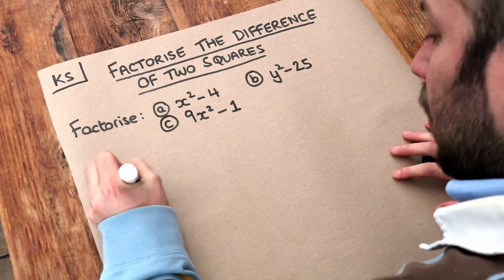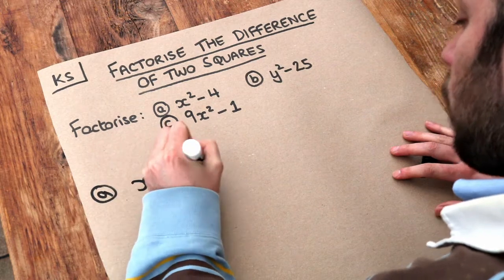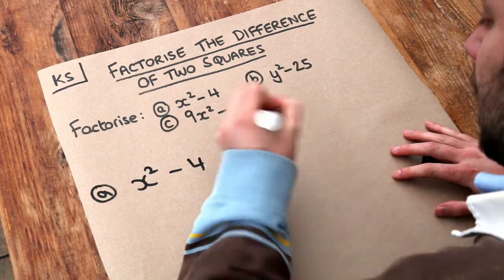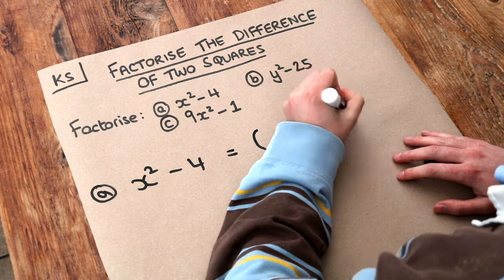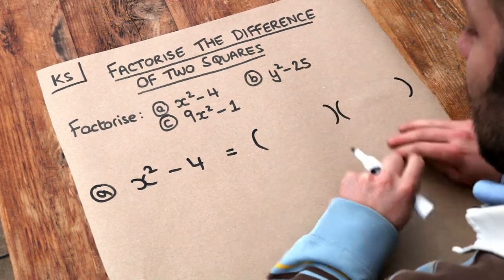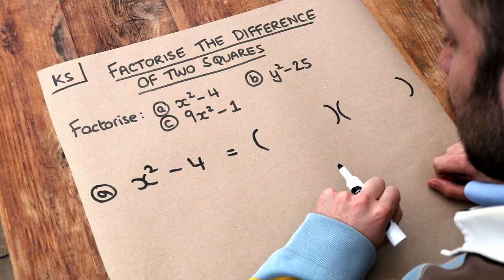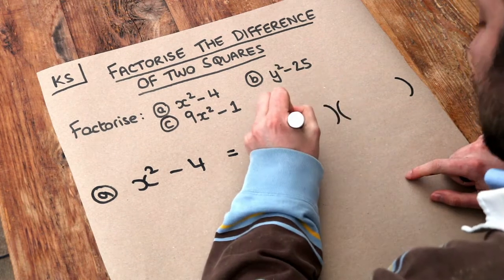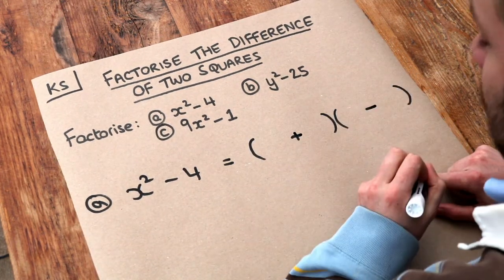Now when that happens, you can factorise it into two brackets. Remember, factorise means to put it into brackets—it's the opposite of expanding. When you have a difference of two squares, you put a plus in the middle of one bracket and minus in the middle of the other.